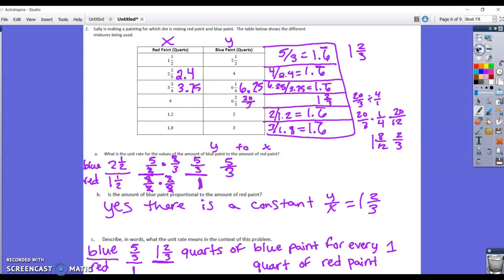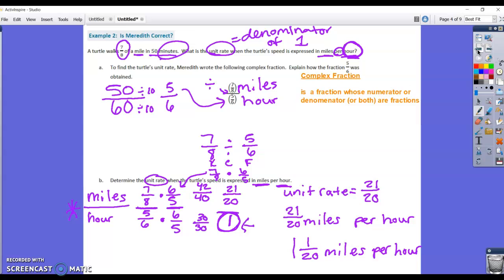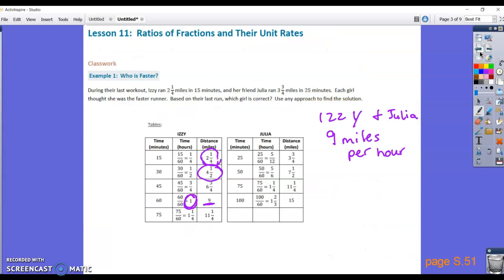We want to be able to figure out how much it is for just one. So like on that very first example that we did, rather than having to set up these two giant tables and see that they went the same speed at 75 minutes. Which, if you didn't actually look at 75 minutes, you would never see that they had that same speed. But if we find the unit rate, how much for one, for one mile or for one minute.